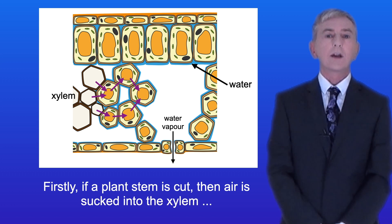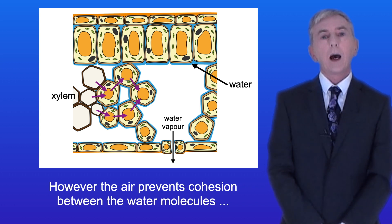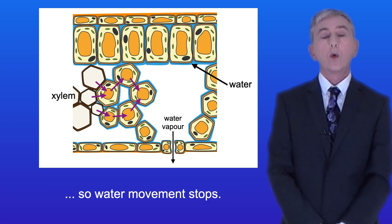Firstly, if a plant stem is cut then air is sucked into the xylem suggesting that the xylem vessels are under tension. However, the air prevents cohesion between the water molecules so water movement stops.